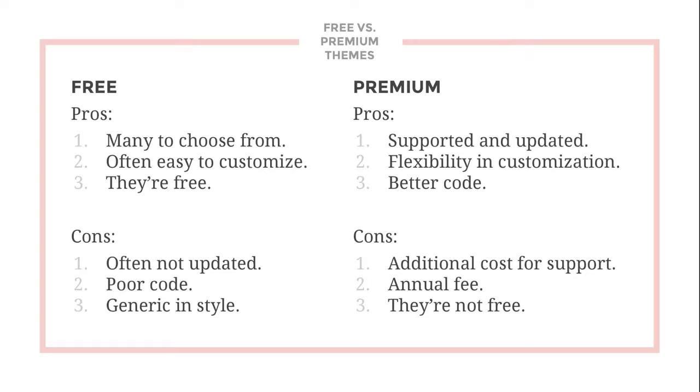There are many, many free themes in the WordPress repository to choose from. They're often easier to customize, don't have a lot of bells and whistles, and they're free. The cons are that because they're free, they're often not updated. WordPress changes its software often and themes need to be updated to follow along — an outdated theme can break your site. Premium themes are often supported because people pay for them, there's money behind the coders who keep them updated, there's more flexibility and customization, and the code is written better. The cons are additional costs for support, annual fees to keep them updated, and they're not free.